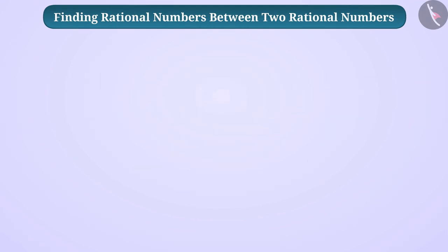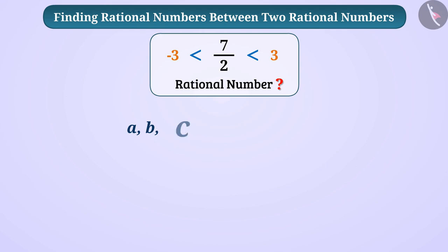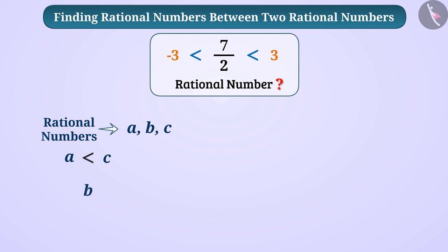Can we call the rational number 7 by 2 as the rational number between minus 3 and 3? If a, b, c are three rational numbers where a is less than c, then b will be called the rational number between these two only when b is greater than a but smaller than c.